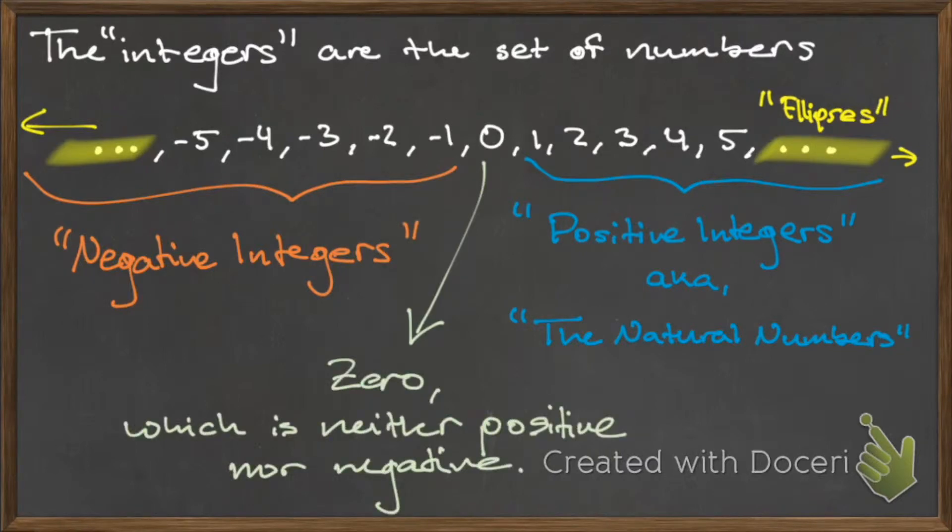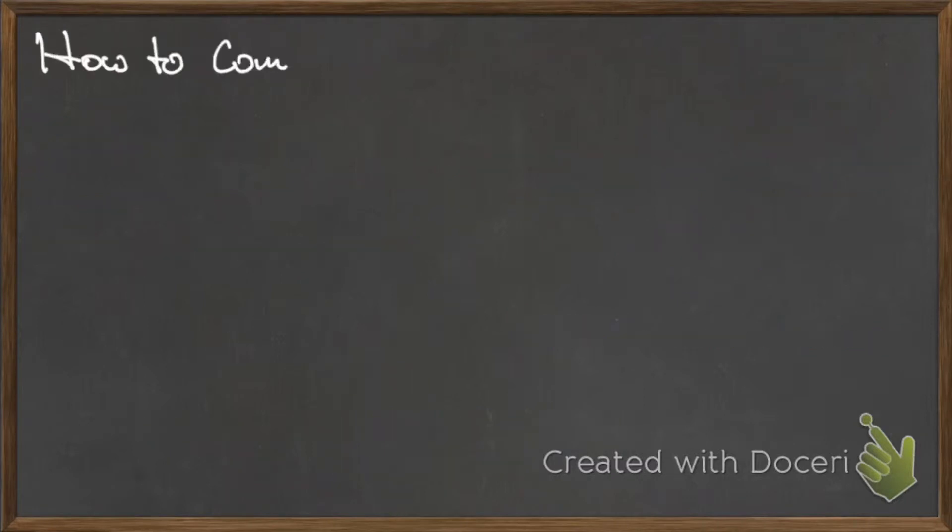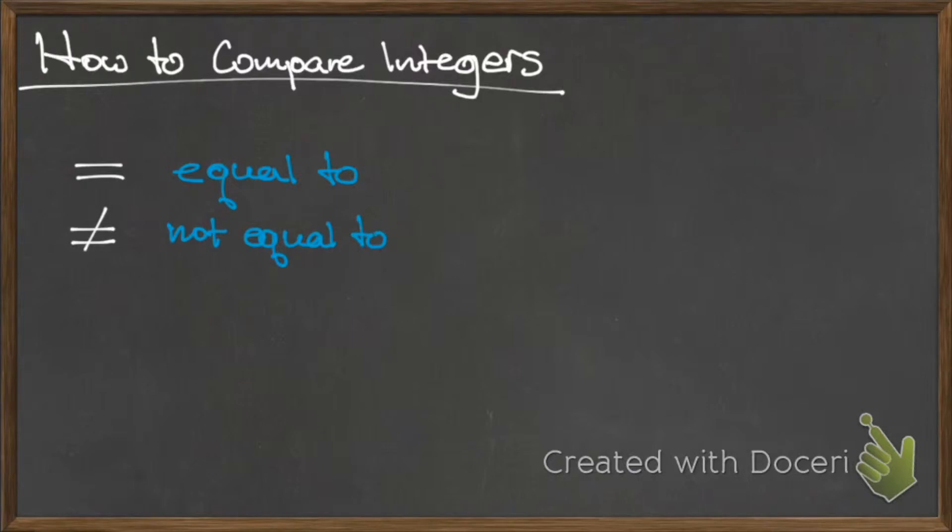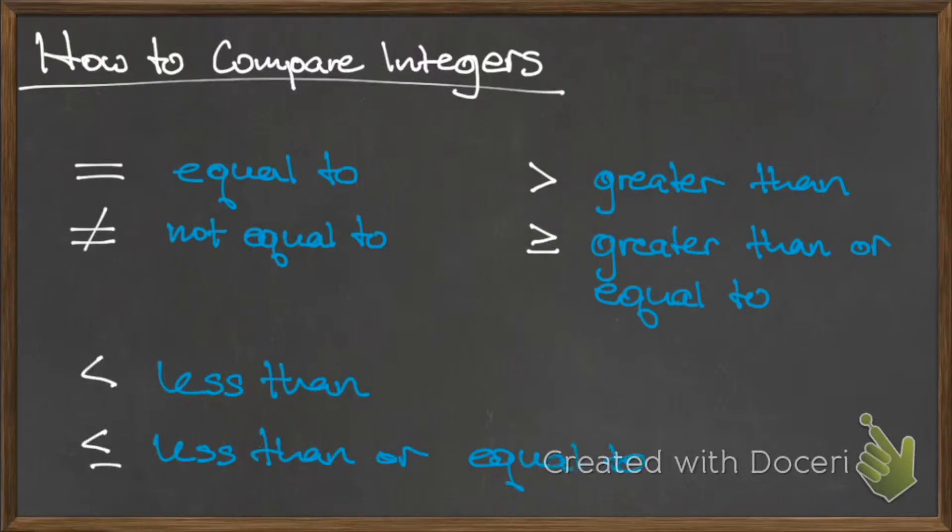When discussing the size or value of one integer in relation to another we have six different mathematical symbols that we use to denote this comparison. These six symbols are equal to, not equal to, greater than, greater than or equal to, less than, and less than or equal to.